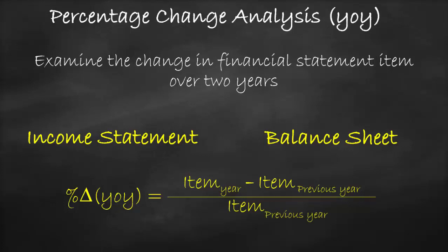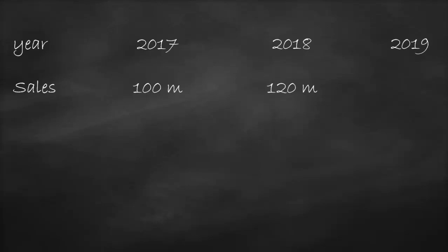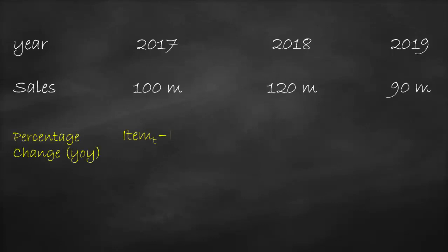Let's apply the percentage change from year to year to the following example for the income statement. A company has sales in 2017 of $100 million, sales in 2018 of $120 million, and sales in 2019 of $90 million. To compute the percentage change from year to year we use the formula of new minus old divided by old.